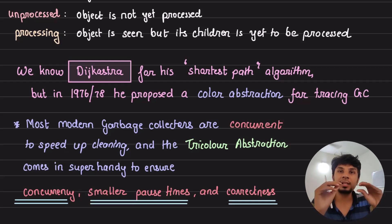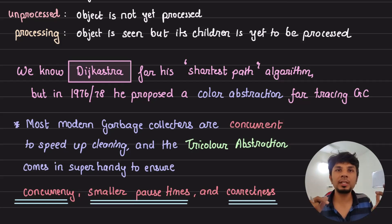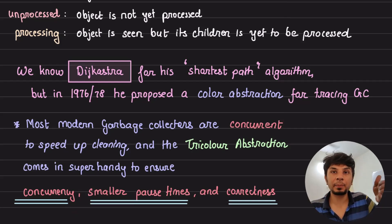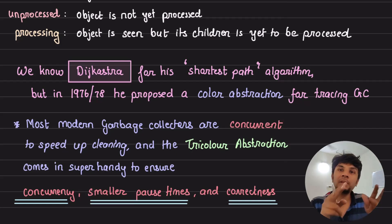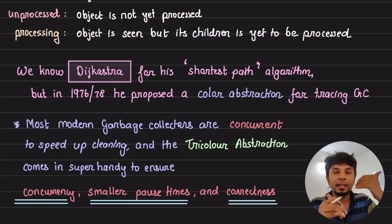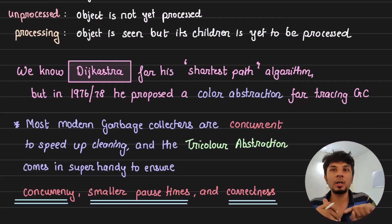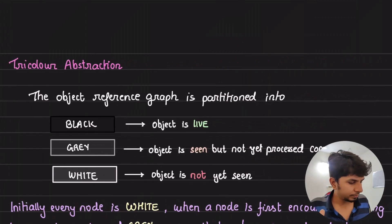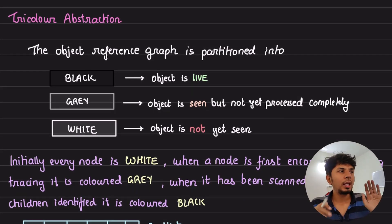Most modern garbage collectors are concurrent because if our garbage collector is not concurrent, we always have to stop the world, which increases pause times and affects the throughput of our program. So we want to build garbage collectors that run concurrently. What Dijkstra contributed is something called the tricolor abstraction, which gives us high concurrency — the garbage collector runs concurrently with the program, can leverage multiple threads to clean up very fast, has very small pause times, and is correct — meaning it never cleans up live objects.